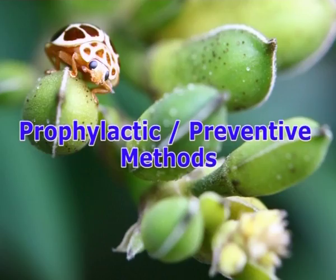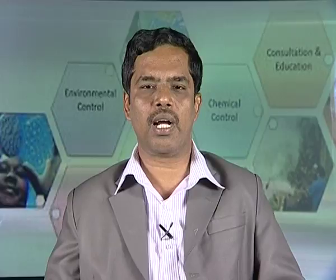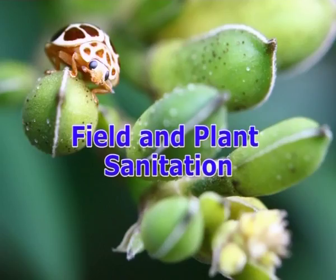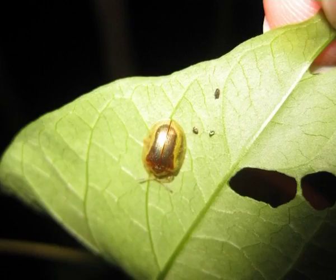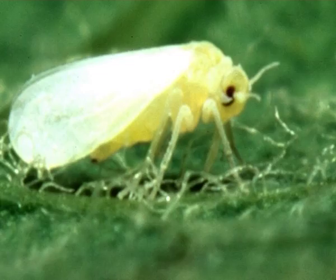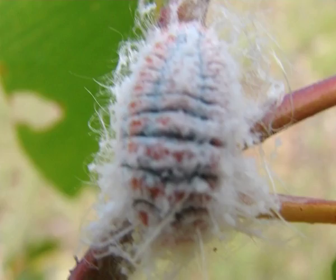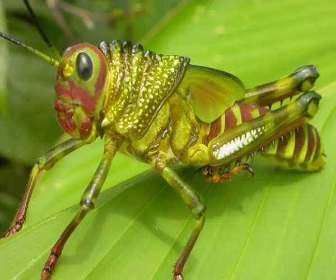Prophylactic or preventive methods: these control measures are effective especially in certain pests which are known to occur in an area year after year or season after season. These measures are field and plant sanitation, regular removal of weeds, grasses, and pest-affected parts of plants. For example, damage due to spiraling whitefly, mealybugs, thrips, grasshoppers, etcetera can be minimized by field sanitation.